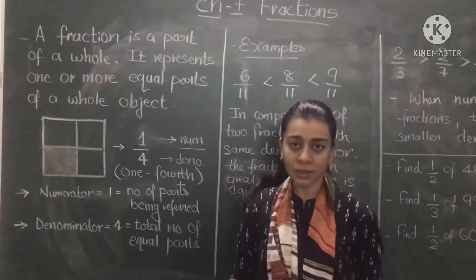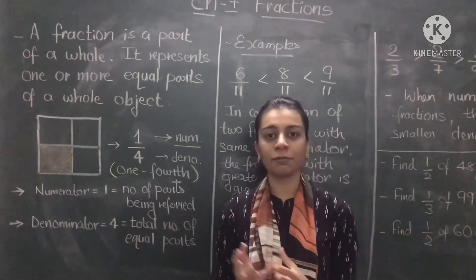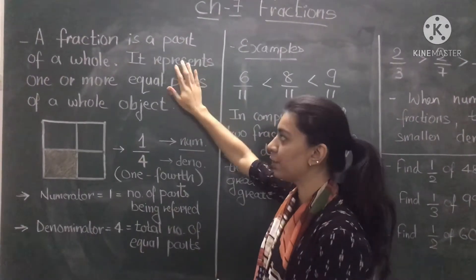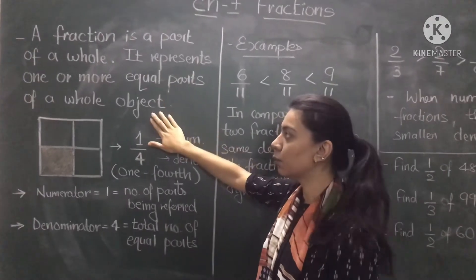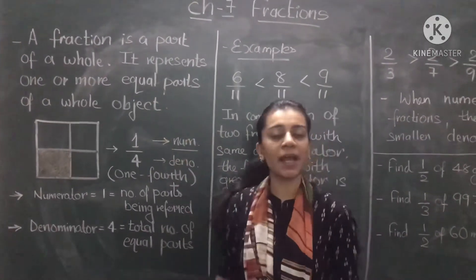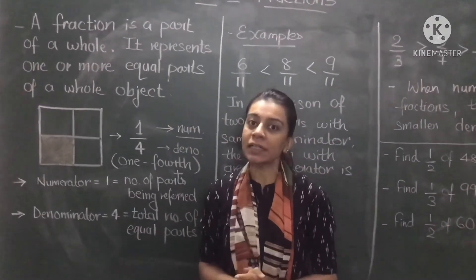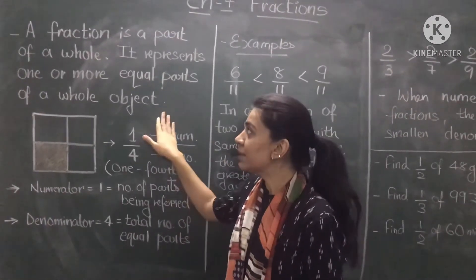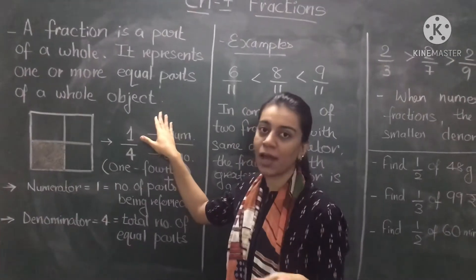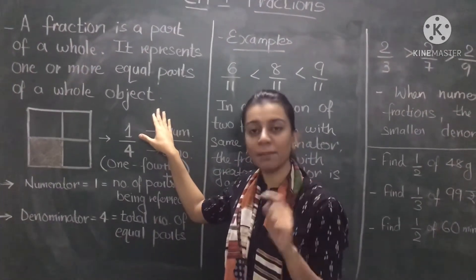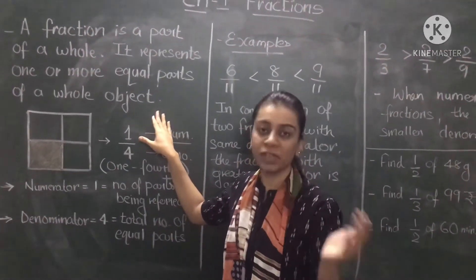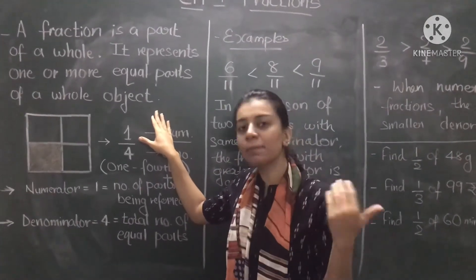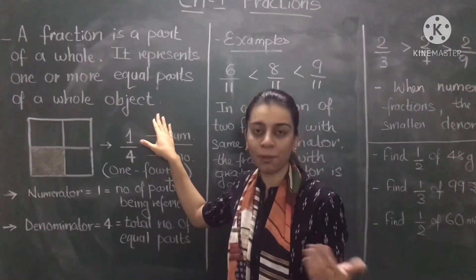What is a fraction? A fraction is actually a part of a whole number. It represents one or more equal parts of a whole object. For example, if I have an apple and I cut it into 5 equal parts, it means I have taken one object and made a specific number of equal parts of it, which can be represented in the form of fractions.